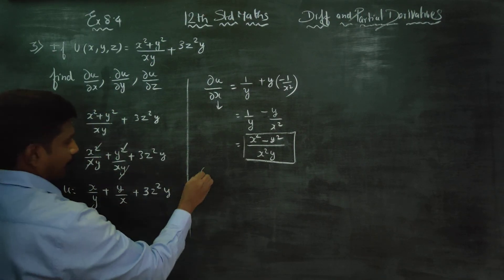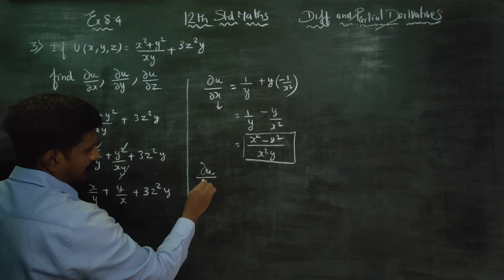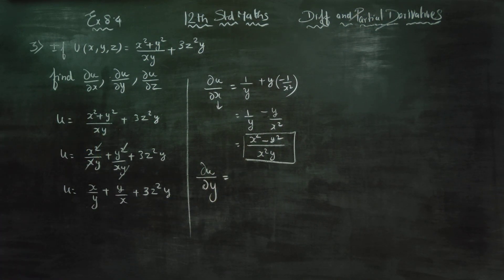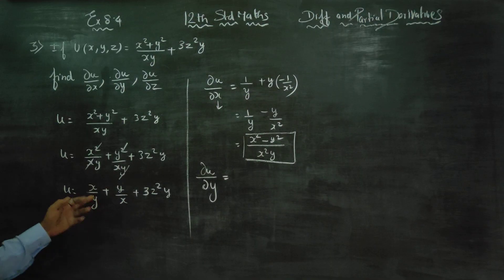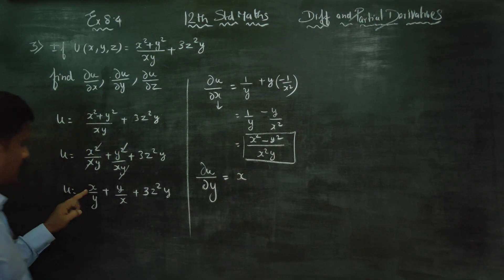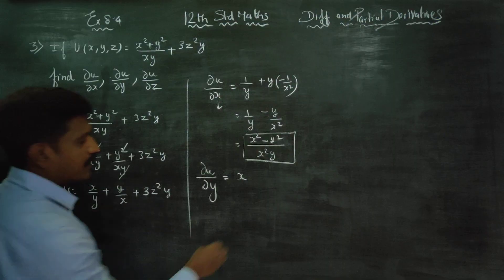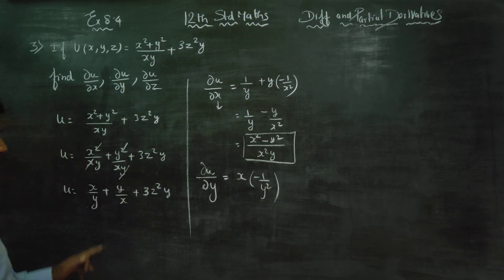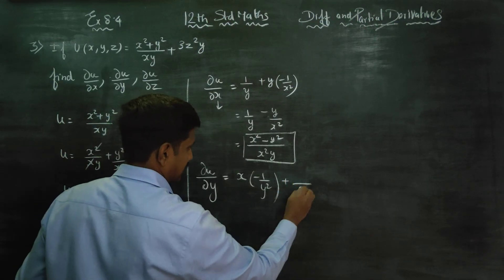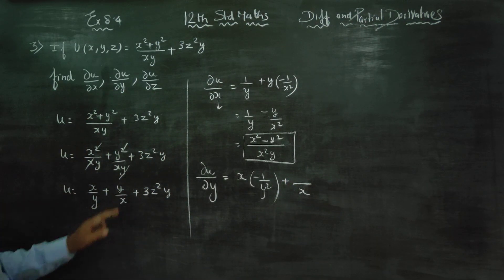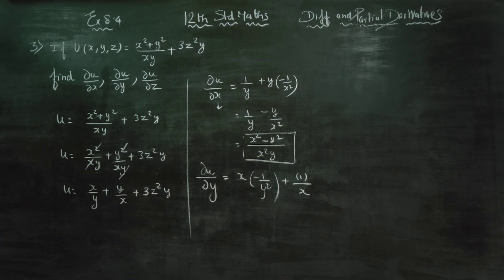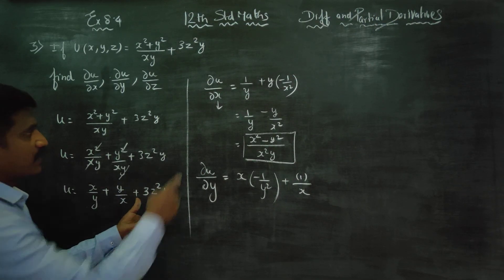Next, ∂u/∂y. When differentiating with respect to y, x is constant. 1 by y differentiates to minus 1 by y square. Plus x is constant, y differentiates to 1.